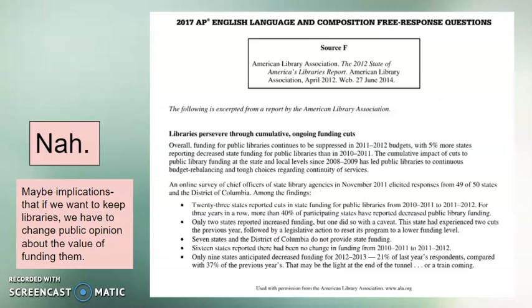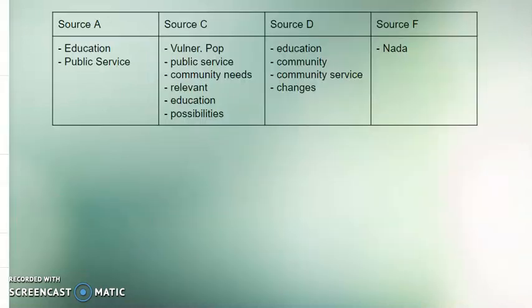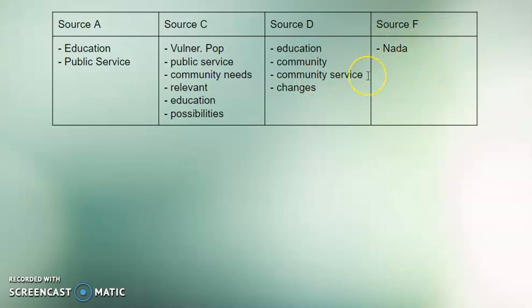Once you go through all your sources, it's time to take inventory of what you have. I have Source A with these ideas, Source C with these ideas, Source D here, and Source F — nothing. What's great about doing this is you can see which sources are most important for your arguments. You can also see the connections: public service and public service, education and education and education. You can see how those sources start to converse with one another, where the similarities and differences are, where one builds upon the other.